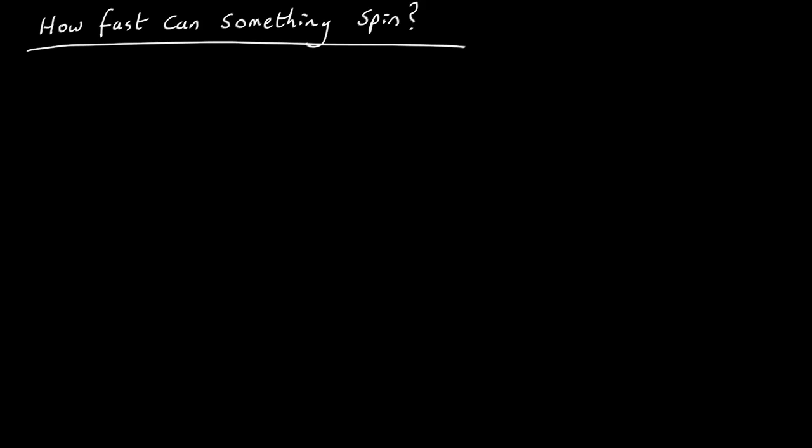Let's try to estimate how fast something can spin without spinning itself to pieces. So let's assume we have a spherical something with a mass, let's give it a solar mass roughly to get some specific numbers, and it's rotating with a particular period P. So P is how long it takes to spin around once.